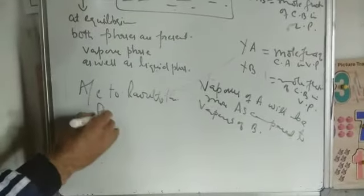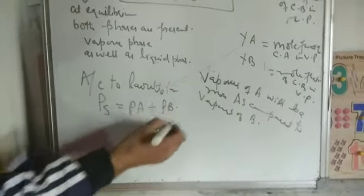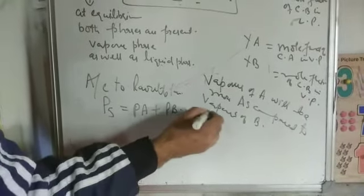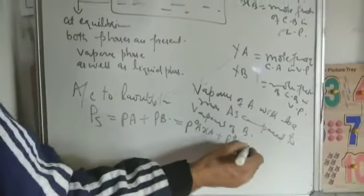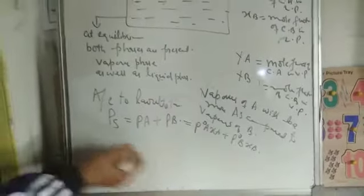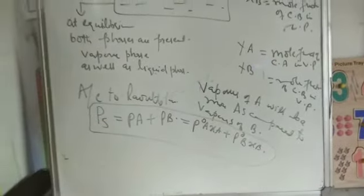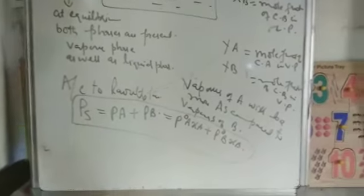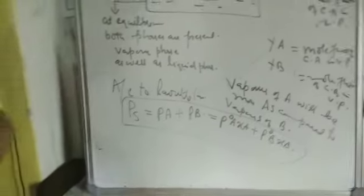According to Raoult's law, vapor pressure of the solution is PA plus PB, that is P0A times XA plus P0B times XB. We have seen this portion. Now if we apply on this solution Dalton's law...